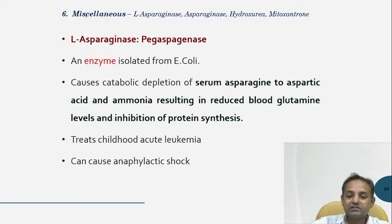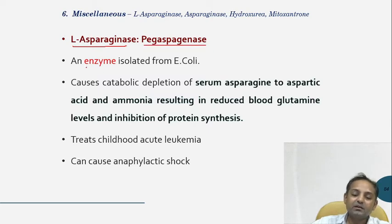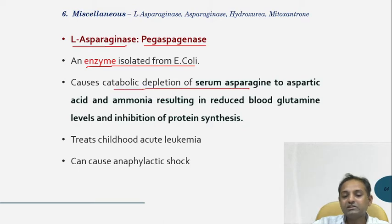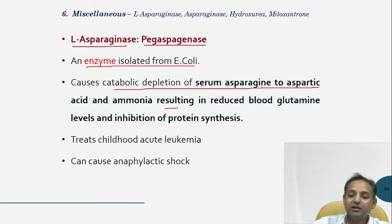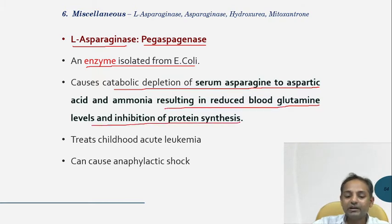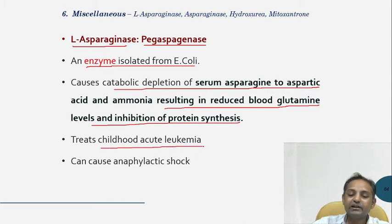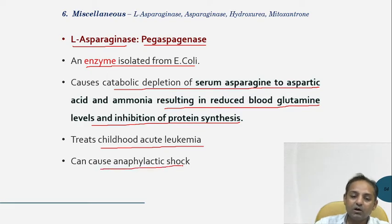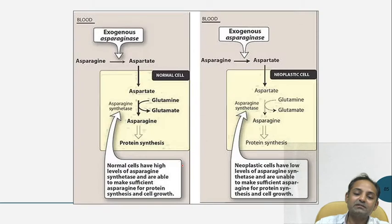Next is a miscellaneous drug. L-asparaginase, also called pegaspargase, is an enzyme isolated from E. coli that causes catabolic depletion of serum asparagine to aspartic acid and ammonia, resulting in reduced blood glutamine levels and inhibition of protein synthesis. It is basically used to treat childhood acute leukemia and can also cause anaphylactic shock.